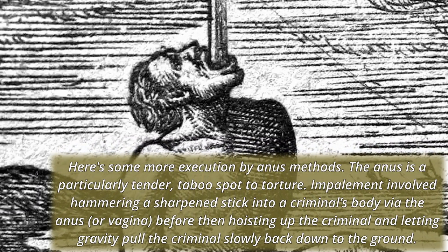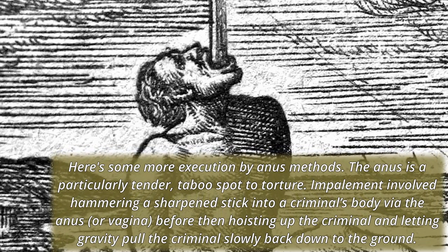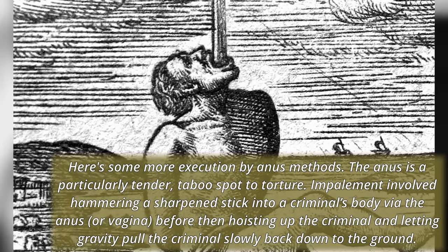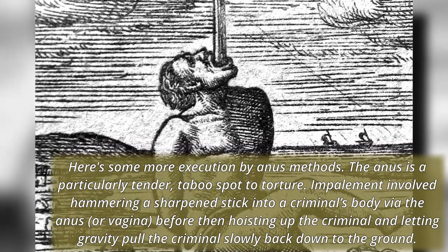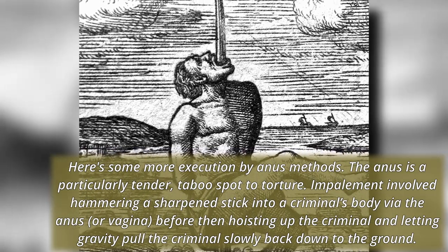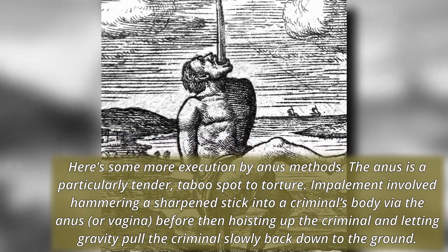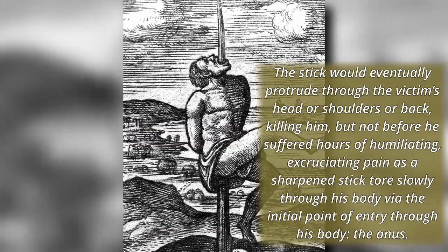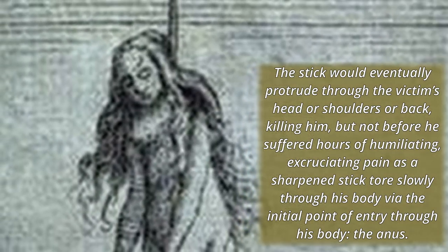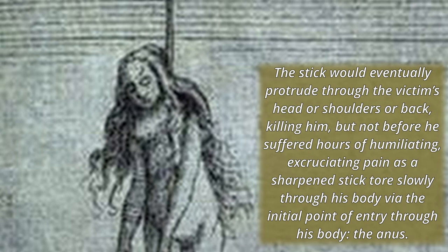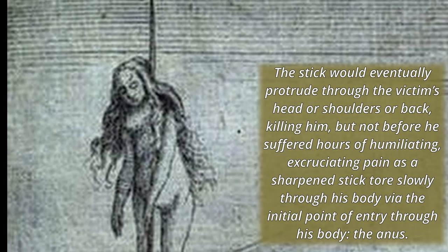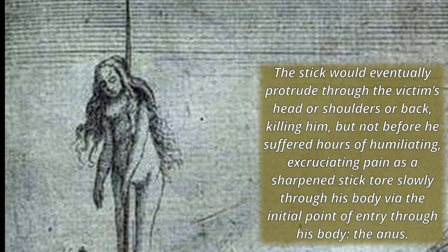Impalement. The anus is a particularly tender, taboo spot to torture. Impalement involved hammering a sharpened stick into a criminal's body via the anus or vagina, before hoisting up the criminal and letting gravity pull them slowly back down to the ground. The stick would eventually protrude through the victim's head, shoulders, or back, killing them — but not before they suffered hours of humiliating, excruciating pain as the sharpened stick tore slowly through the body.